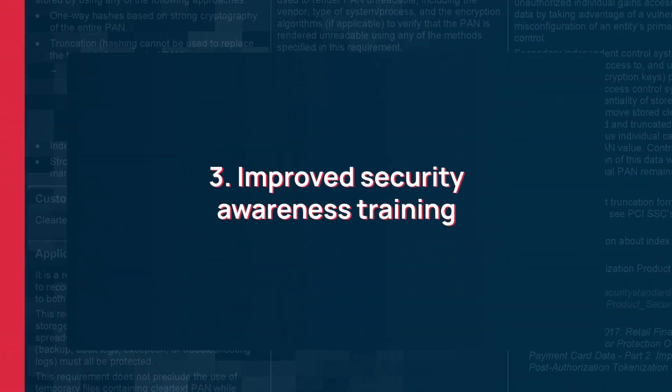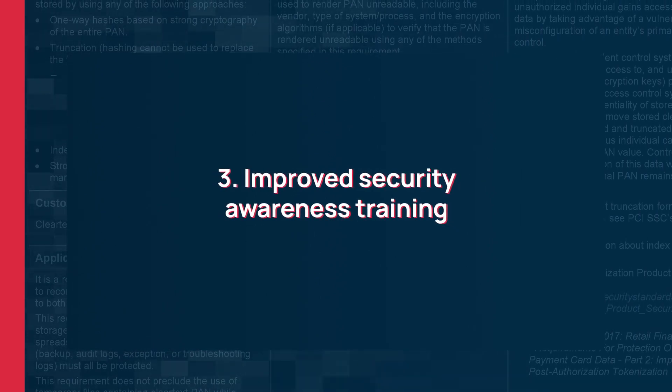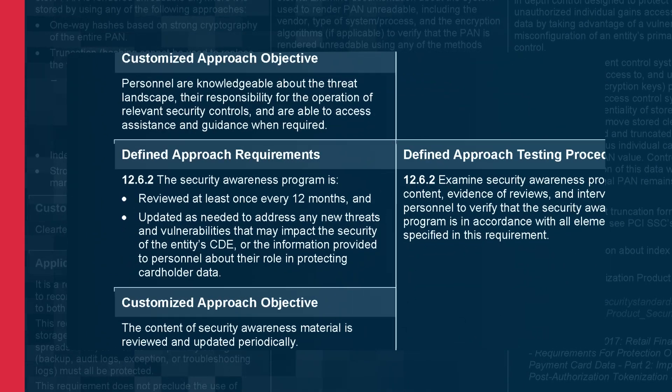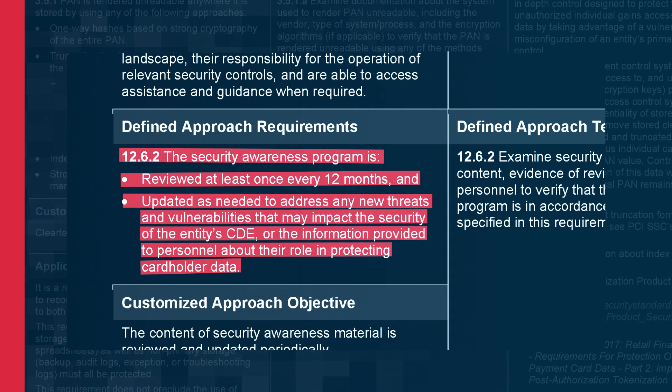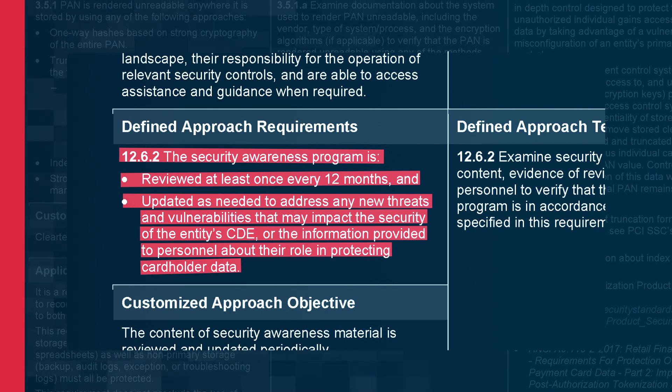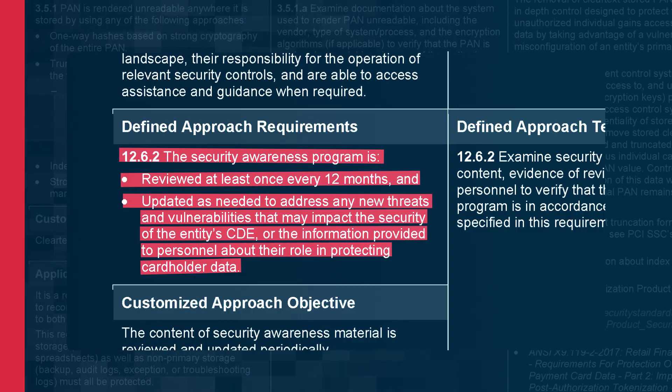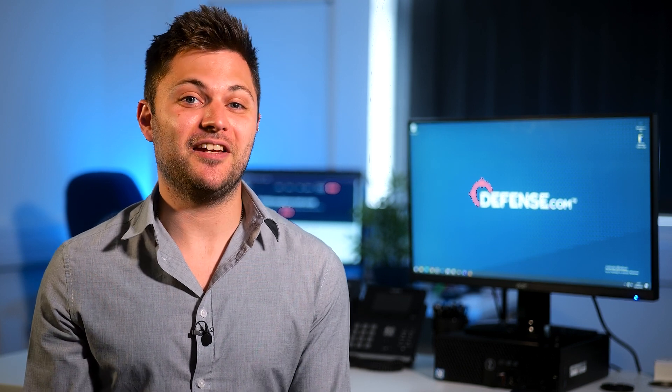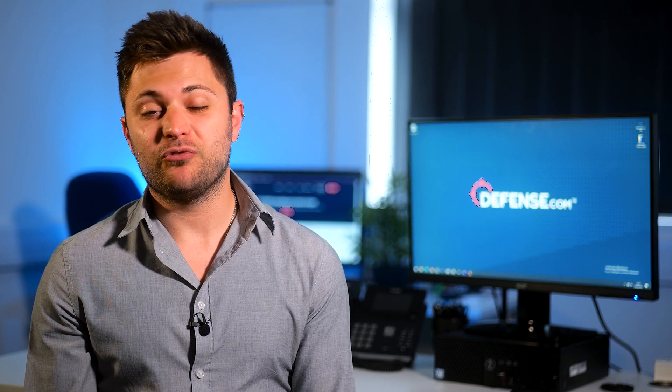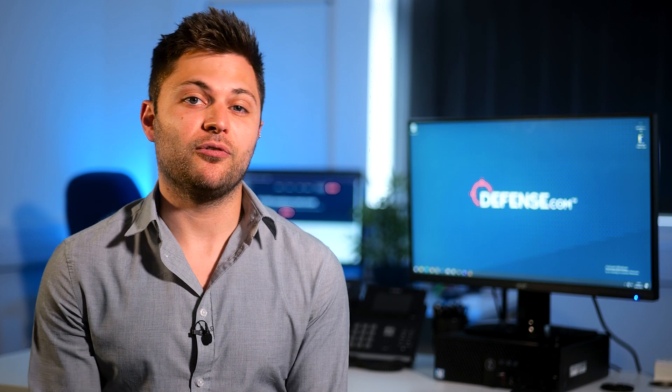Number three is about improving security awareness training for your staff. Version 3.2.1 had quite a lot about how to train staff properly, but PCI DSS version 4 takes that to a new level. It mandates that you must train your staff at least annually for cybersecurity awareness, with more detail on topics such as social engineering and phishing attacks. Humans are the best form of defense in a company — a single phishing email that a user clicks on can bring everything down — so these controls are a very welcome change in version 4.